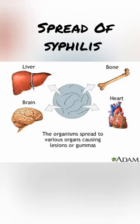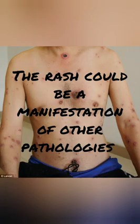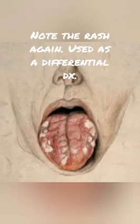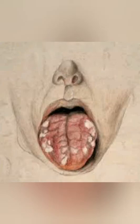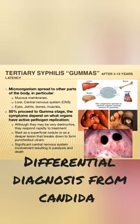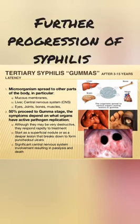In secondary syphilis, the differential diagnosis includes drug eruptions, acute febrile exanthemas, psoriasis, lichen planus, and scabies — since the rash may resemble these conditions. The mucous patches may be confused with oral thrush, and the combination of malaise, sore throat, lymphadenopathy, hepatitis, and rash may mimic infectious mononucleosis. However, serologic tests for syphilis are positive in 99% of secondary syphilis patients, aiding accurate diagnosis.